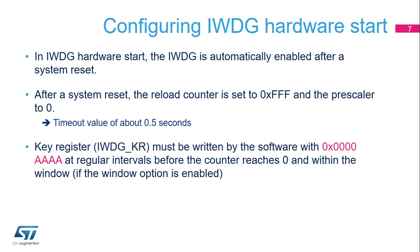The Independent Watchdog hardware is enabled by the device's option bytes. If the hardware mode is enabled, after every system reset, the watchdog automatically loads the down-counter with 0xFFF and starts to count down. The prescaler is set to zero, providing a division by four on the input clock. To prevent any reset, the key register must be refreshed at regular intervals before the counter reaches zero and within the time window if this option has been selected.